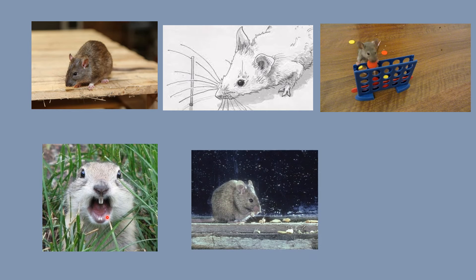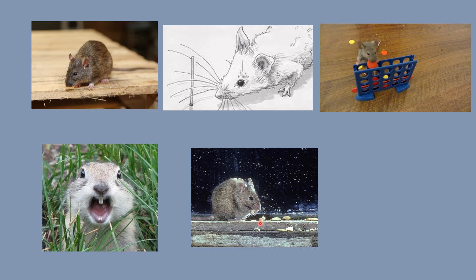Children, mice are normally seen at night. They are called nocturnal creatures. Nocturnal means animals that are active mostly in the night — like even bats which come out only at night. So they are called nocturnal creatures.